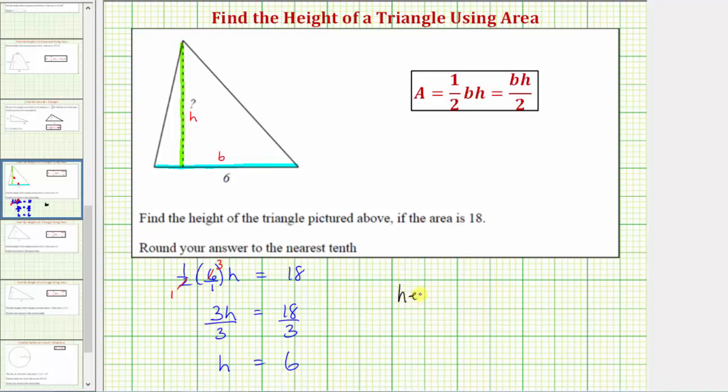So now we know the height of the triangle is equal to six units. So if a triangle has a base of six units and a height of six units, the area will be 18 square units. I hope you found this helpful.